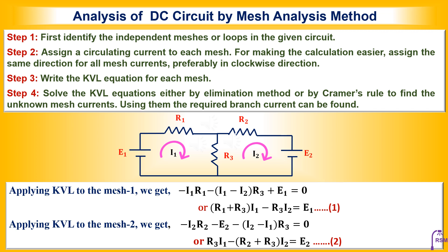In mesh analysis, it is important to note that the current through a common branch is the sum of the two mesh currents when both mesh currents flow in the same direction through that branch. The current through the common branch is the difference of the two mesh currents when the two mesh currents flow in opposite directions through that branch.